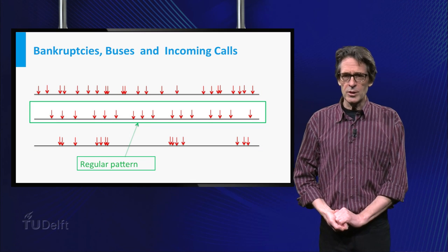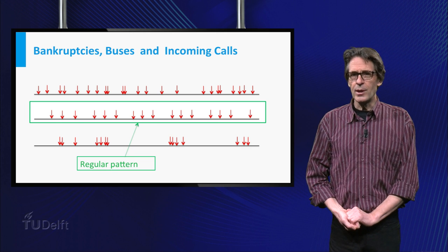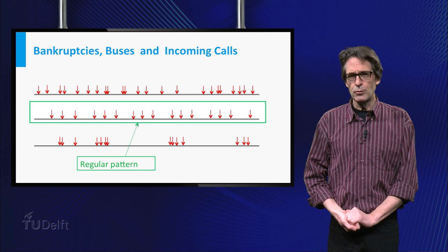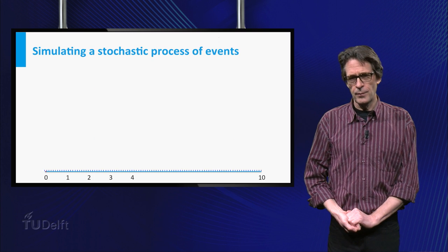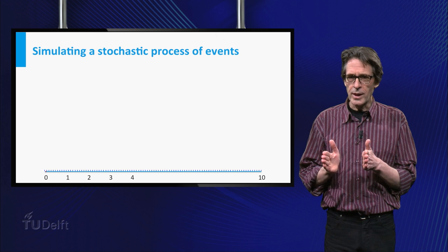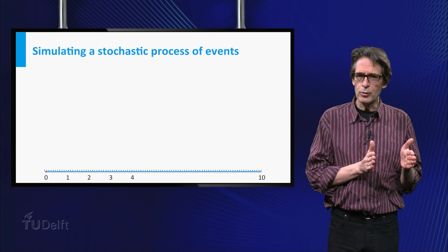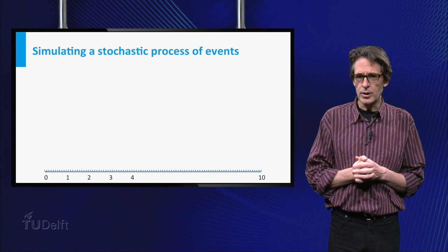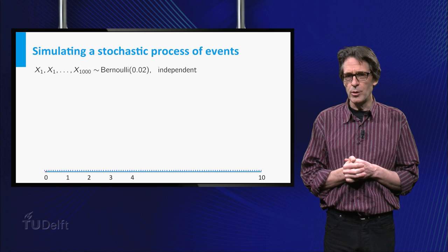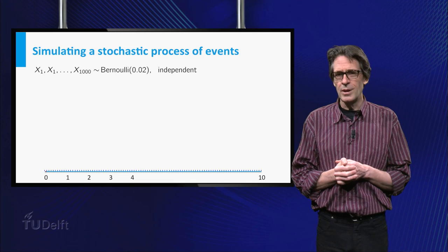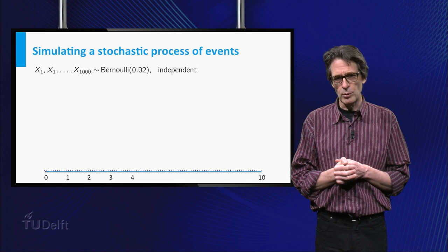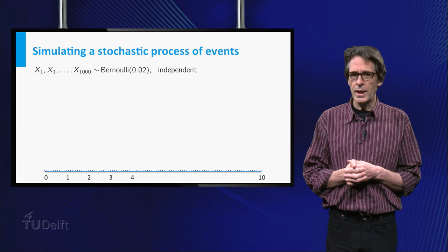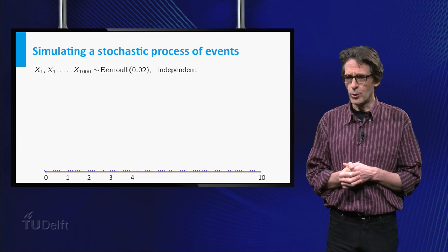In order to get some feeling for what is meant by uniform and completely random process, let's consider the following procedure. We split up the time interval (0,10) in a thousand small intervals of length 0.01, and for each such interval we define a Bernoulli distributed random variable with success probability p equals 0.02. So we need a thousand of these variables, which we take independent. We let the computer do the work.